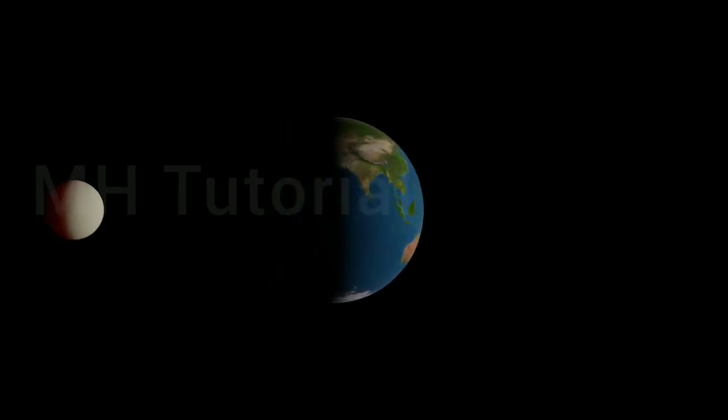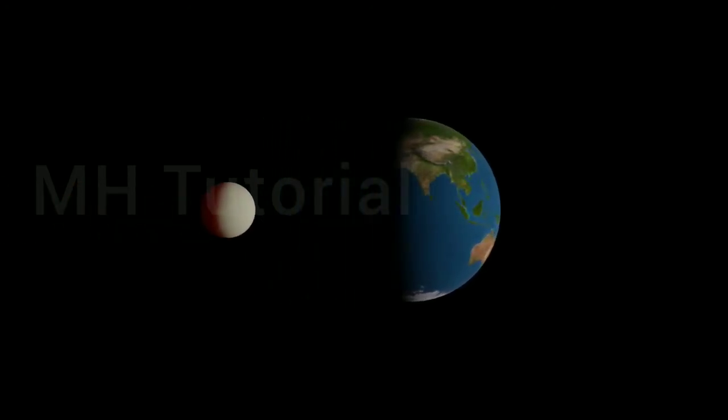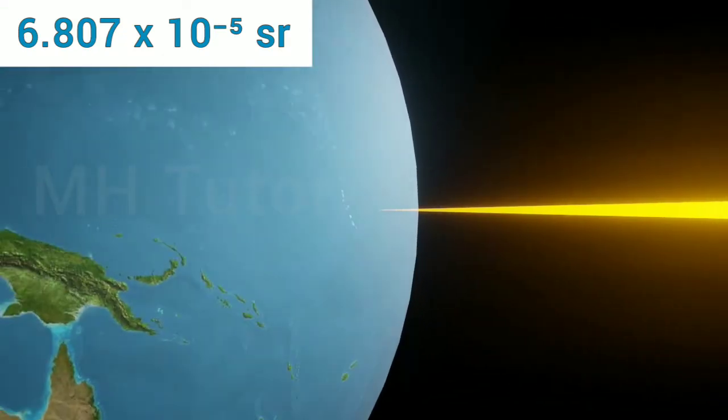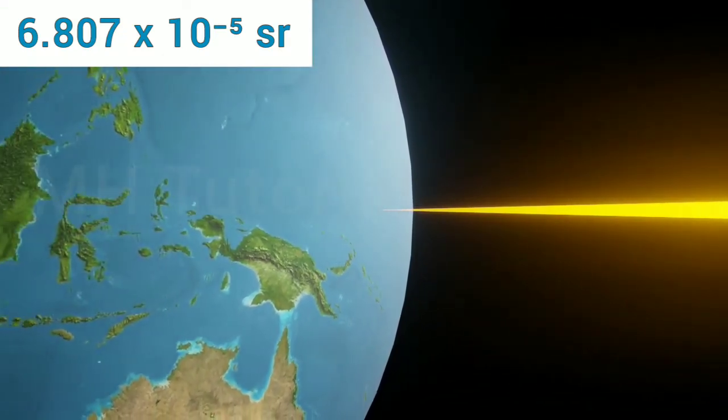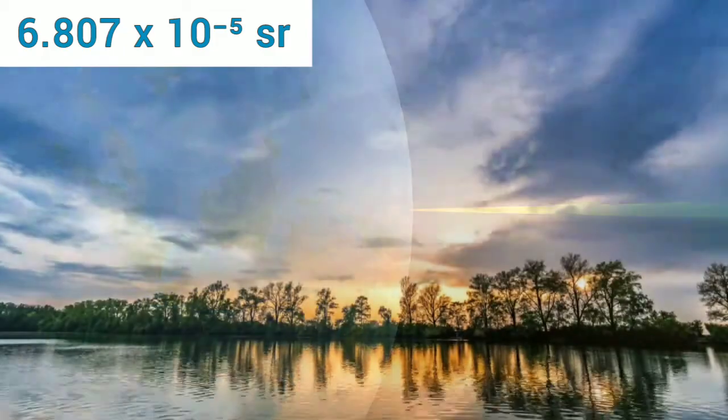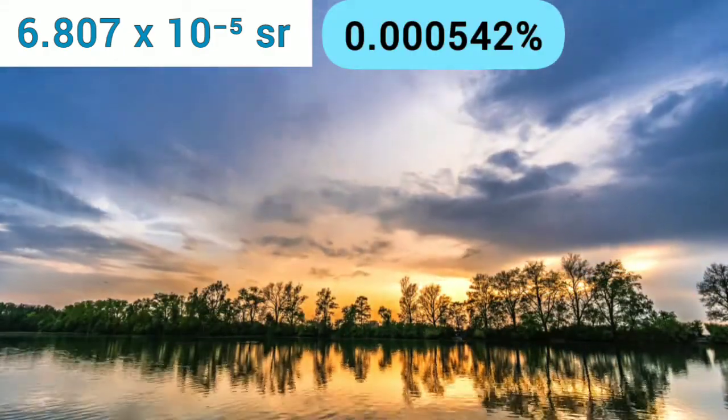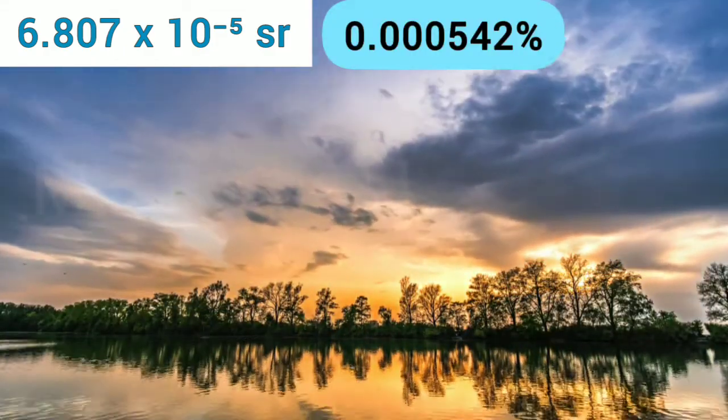The sun or the moon creates almost equal solid angle on the surface of the earth. It is roughly 6.807 × 10⁻⁵ steradians, which is about a portion of 0.000542 percent of the total viewable sky.